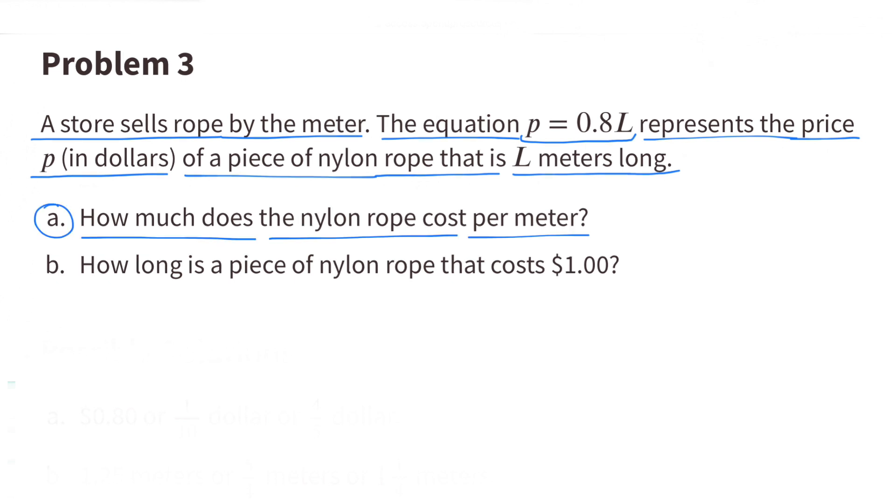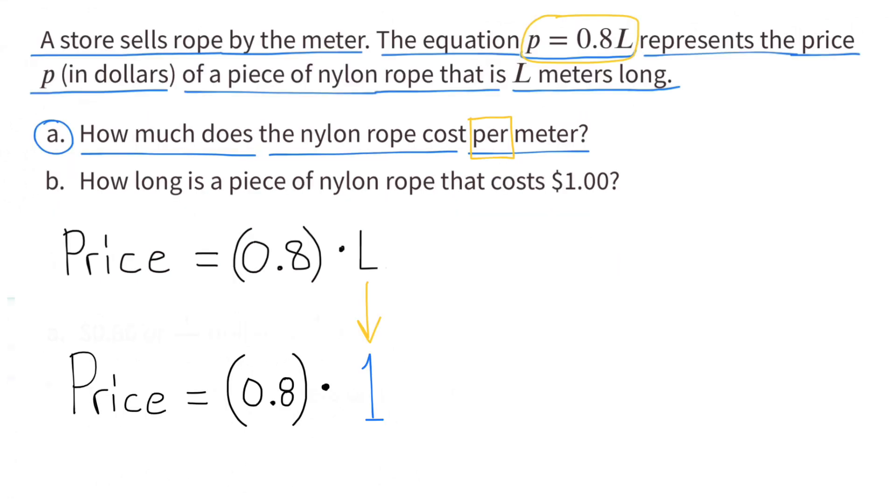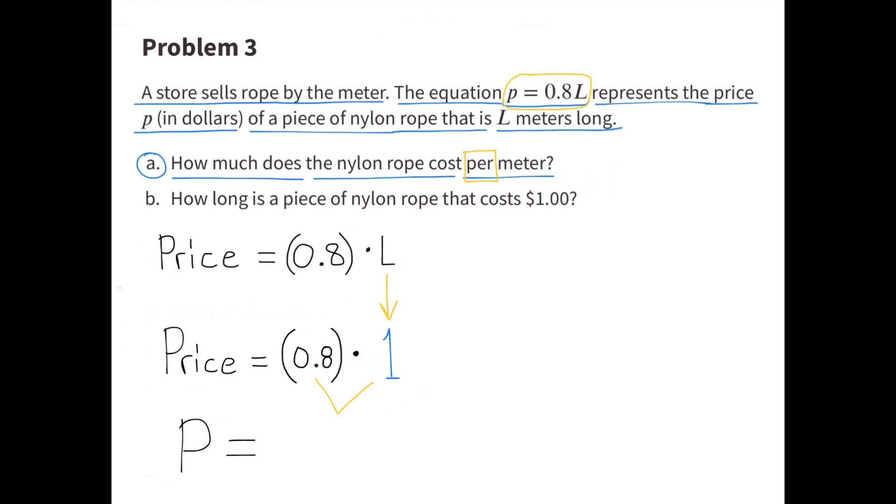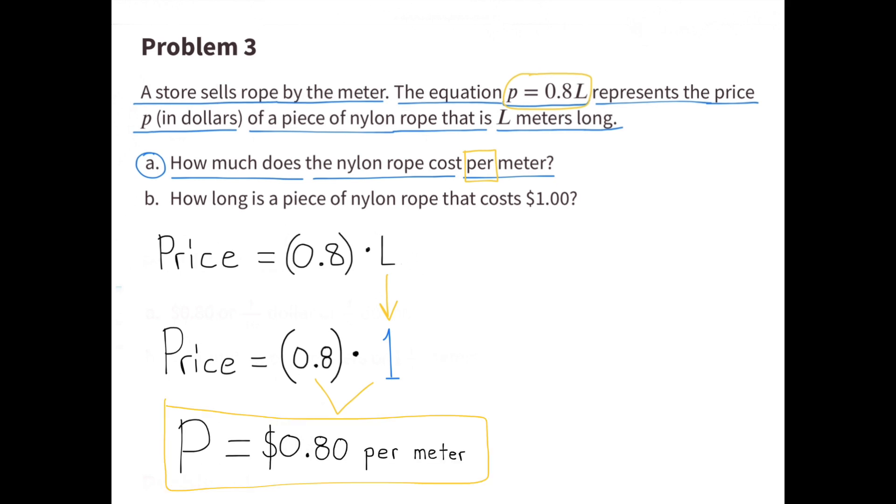The key piece of information is the price equals 8 tenths times the length. When the length is 1 meter, then the price is 8 tenths times 1. And 8 tenths times 1 is 8 tenths. So the price for the rope is 80 cents per meter.